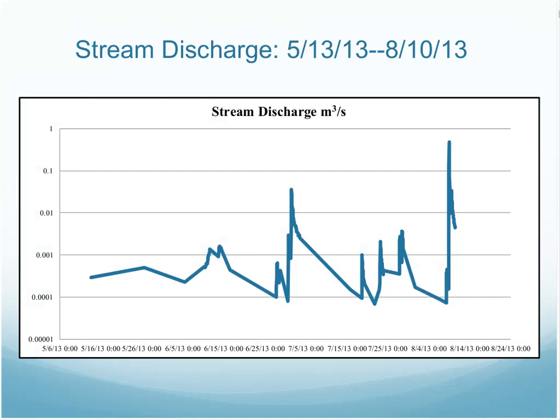Here is a graph of the overall stream discharge over the course of the summer, from May 13th to August 10th. As you can see, this was a perfect summer to do this project — we had lots of large rain events and loads of samples to work with, which is always wonderful when doing research. For this presentation, I'd like to share with you the two largest rain events of the summer: the first one was July 1st, and the second one was August 8th.